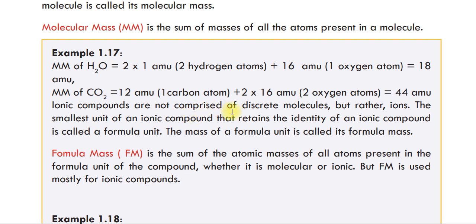Ionic compounds are not comprised of discrete molecules, but rather ions. The smallest unit of an ionic compound that retains the identity of an ionic compound is called a formula unit.